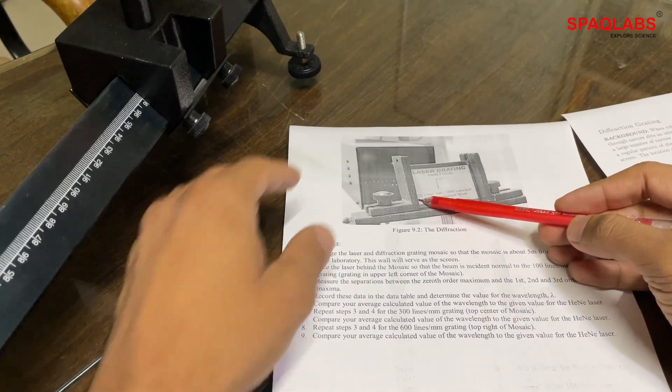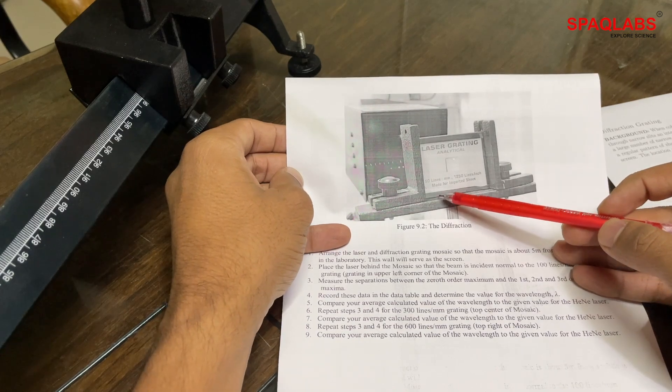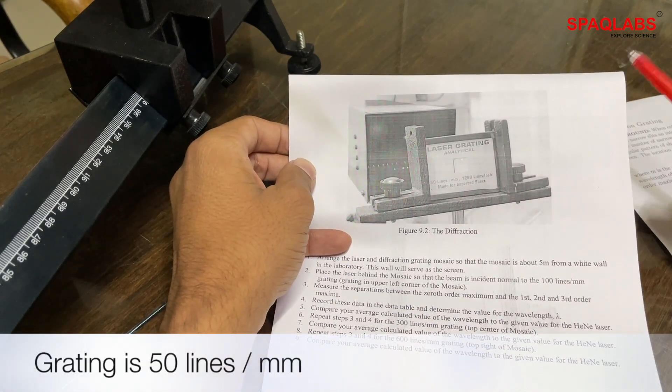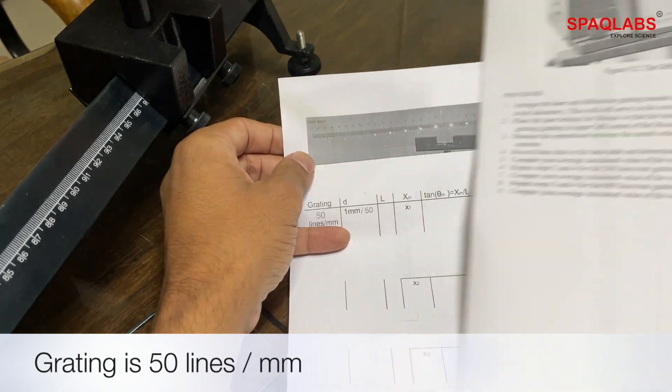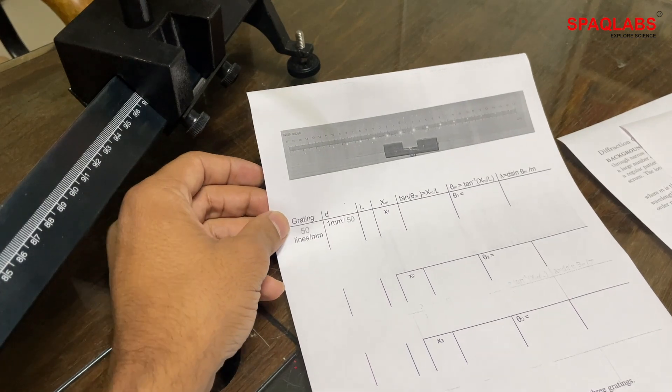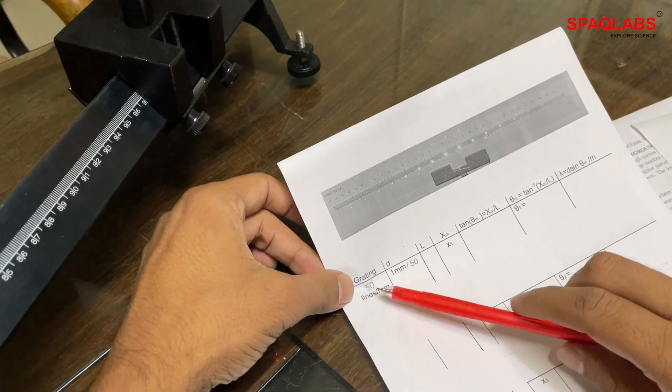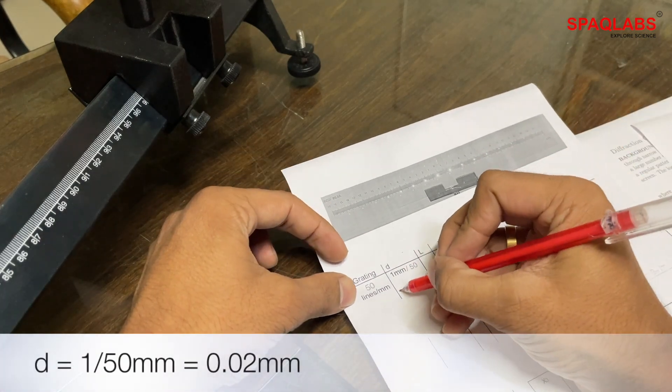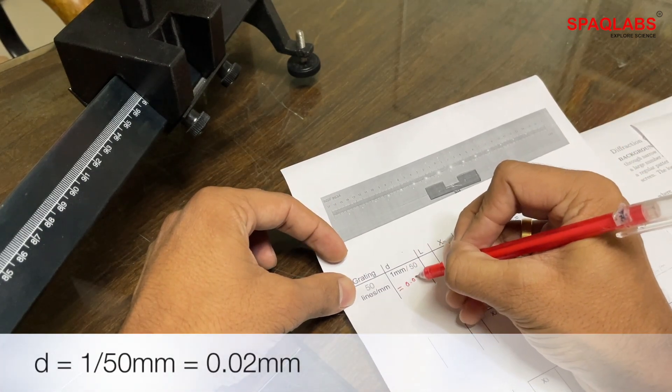Now the setup is ready for taking readings. The grating is 50 lines per millimeter. D is 1 by 50, which equals 0.02 millimeters.